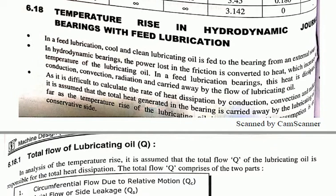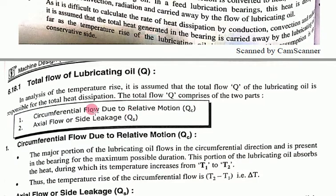In the last lecture we covered the complete design procedure for hydrodynamic journal bearings, including the temperature change delta t. Now let us discuss the temperature rise in hydrodynamic journal bearings with feed lubrication. The total flow of lubricating oil is q, and the analysis assumes that the total flow q is responsible for the total heat dissipation — as flow increases, heat dissipation also increases.